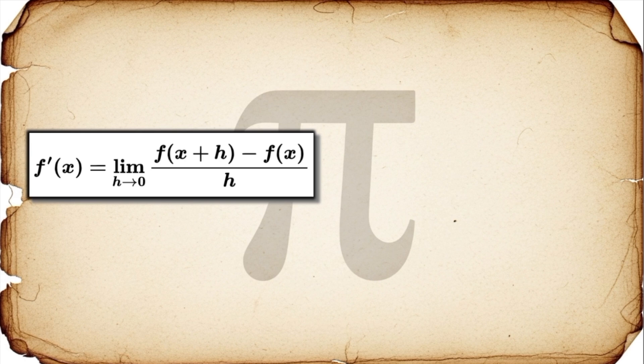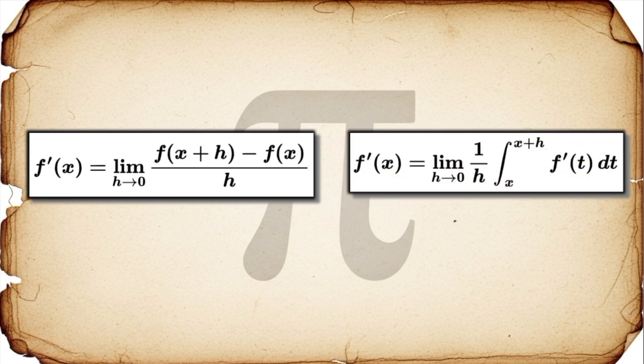But now look at the right. This new definition says that f prime of x is the limit as h approaches zero of one over h times the integral from x to x plus h of f prime of t dt. Wait a minute. How can we define the derivative, f prime, using an integral of f prime itself? That feels like defining a word by using the word in its own definition. It seems totally circular.